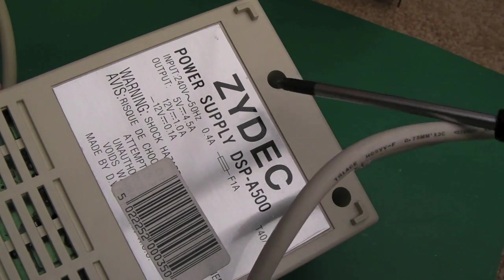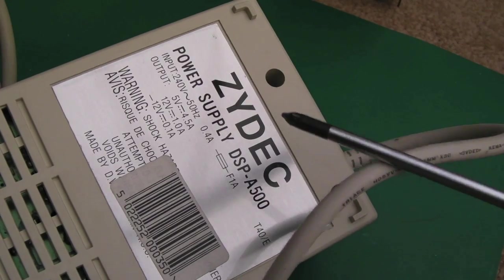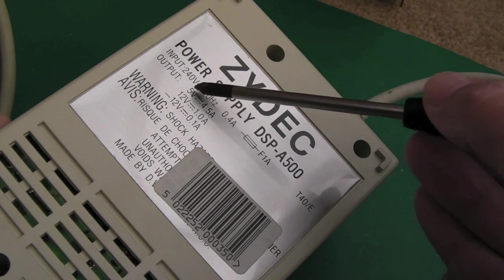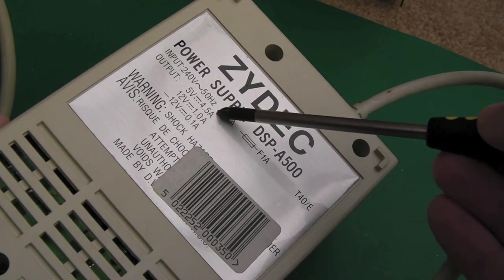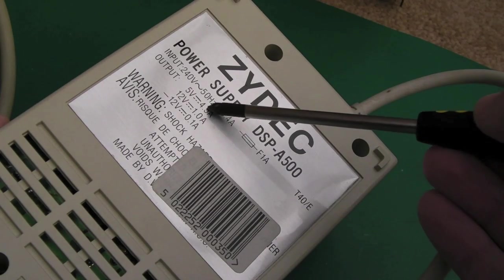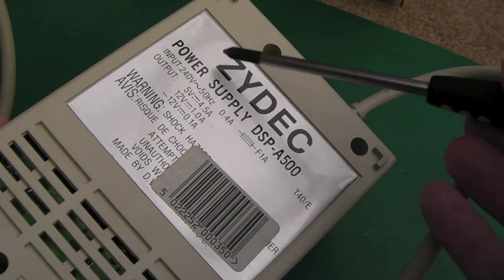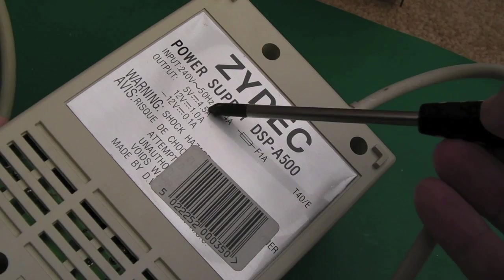Gadget UK here again, this time looking at a Zydeck Amiga power supply. You can see some of the stats in the bag here: provides 5 volts at 4.5 amps, that's pretty good, that's pretty beefy. Not sure how that compares to one of the original Commodore branded 500 power supplies, but that's pretty good on the 5 volt line.